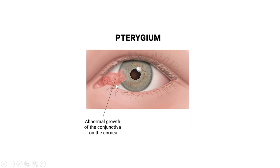Like other progressive diseases, pterygium has four stages. In stage 1, it has just crossed the limbal area. In stage 2, the head is midway between the limbus and the pupillary margin. In stage 3, the head has reached the pupillary margin. In stage 4, it has reached the center of the cornea, blocked the pupil, and caused a decline in visual acuity.